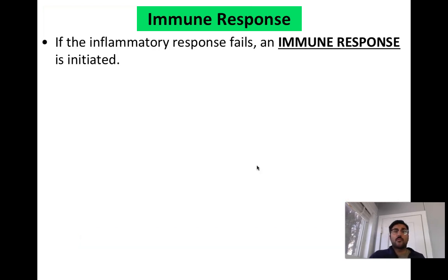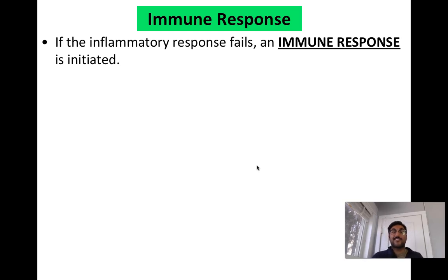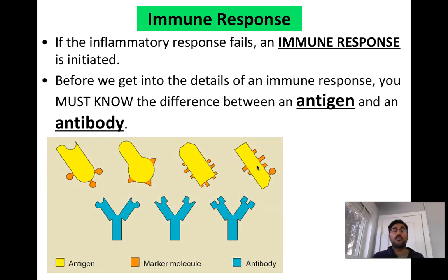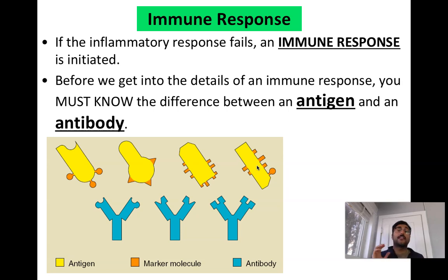Inflammation is a way for the body to heal itself and prevent a major infection. If we can expel the pathogen before it causes major damage, it might be uncomfortable but life is good. The immune response is a full-on response — if the inflammatory response fails, then the immune response needs to start. This is a full-blown blood cell response. Before we get started, we need to know two different terms: antigens and antibodies.